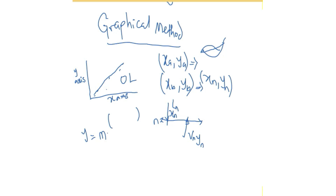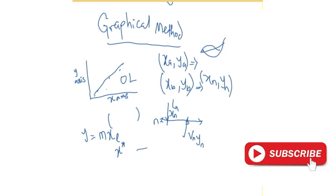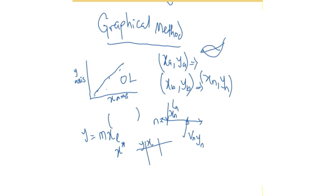We are also given another equation called the equilibrium line: Y equals M times X*, where XE or X* means X at equilibrium. From this equation, we determine values of Y and X and draw the equilibrium line. Between the operating line and the equilibrium line, we draw triangles — alternating vertical and horizontal steps as we touch each line.